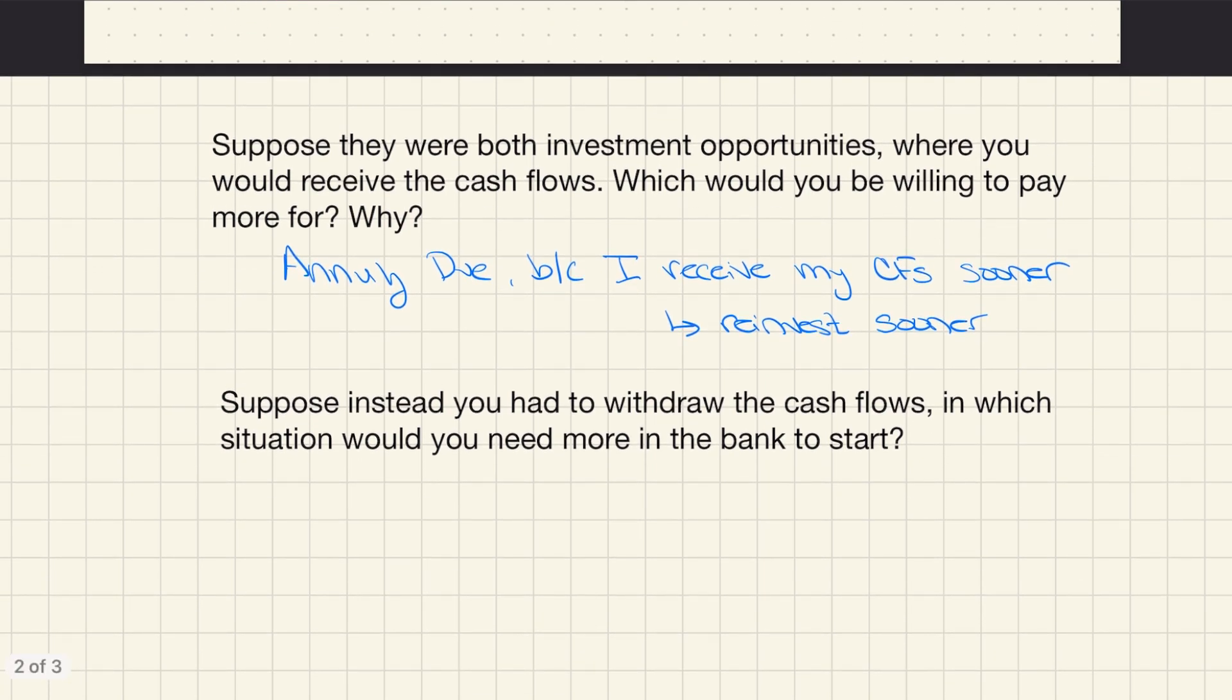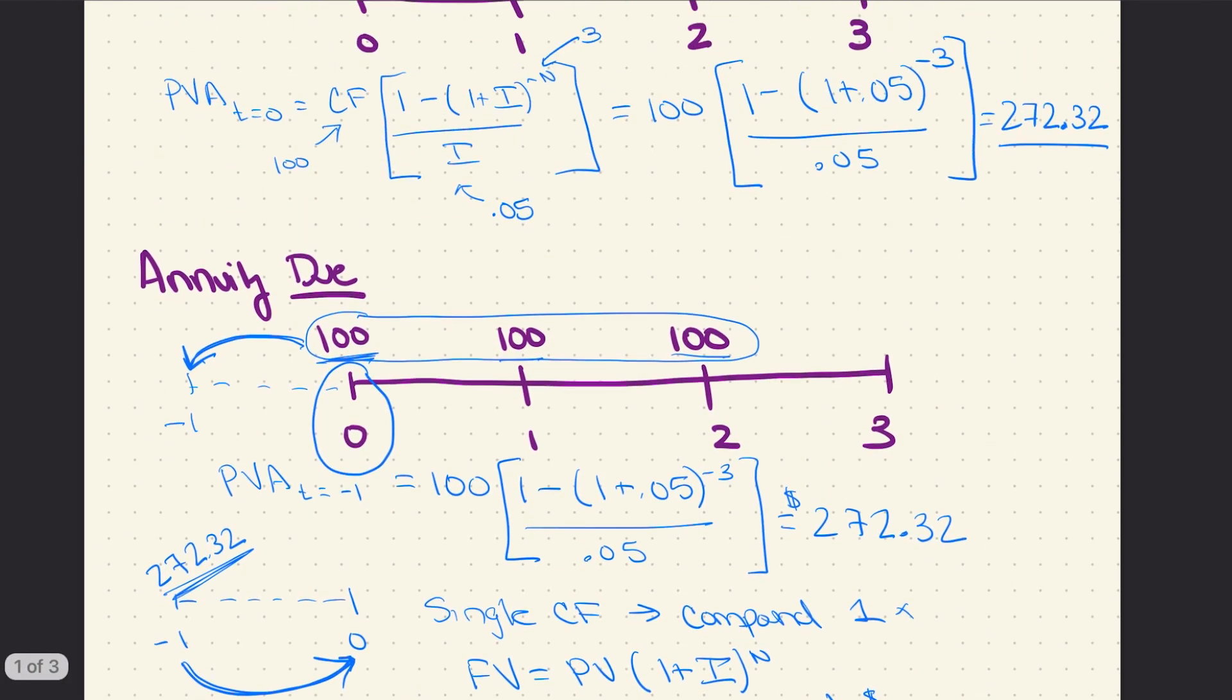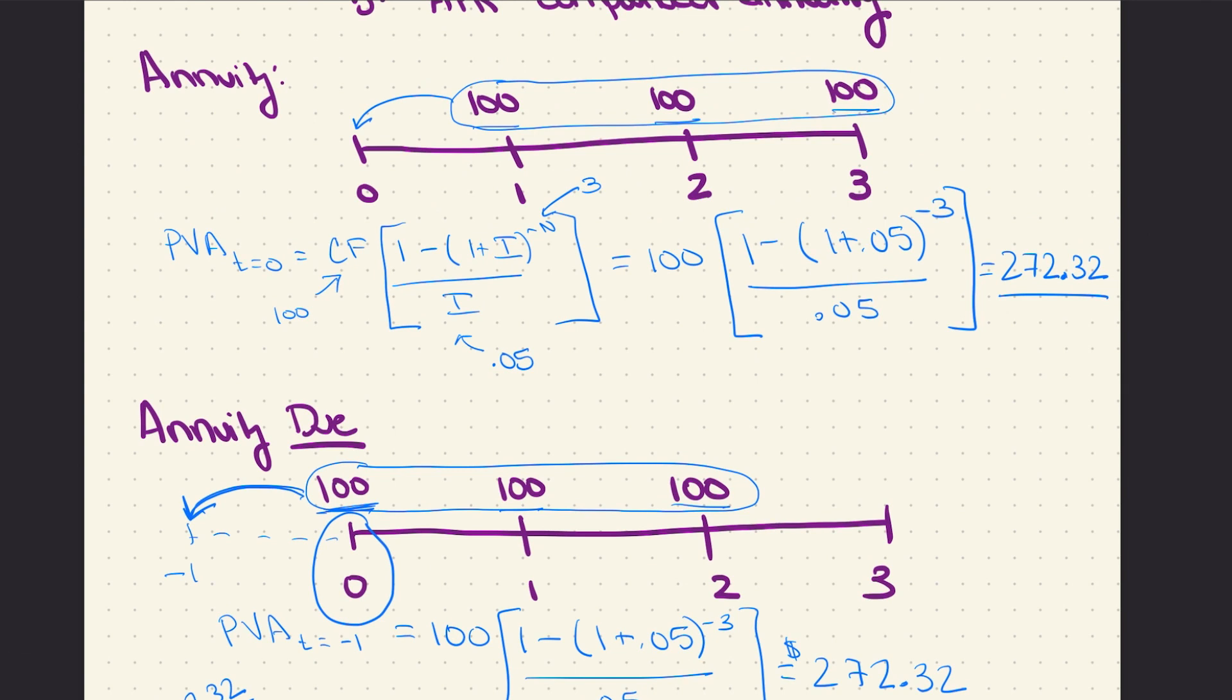Now I could also look at the opposite version of the question. Suppose instead you would withdraw the cash flows. In which situation would you need more in the bank to start? You could think about this as a set of bills that you had to pay. Would you need to have more money in the bank if you had to pay your first $100 one year from now, or if you had to pay your first $100 today?